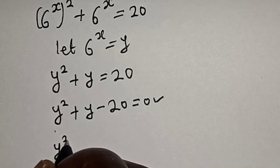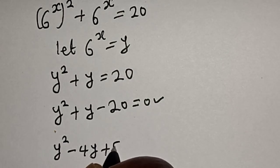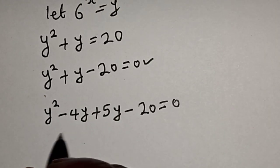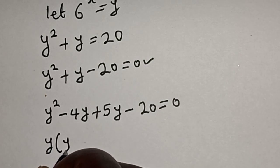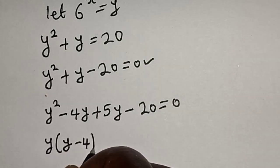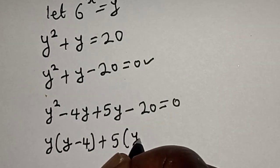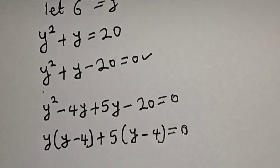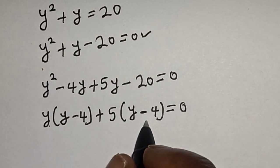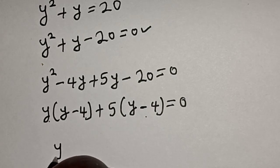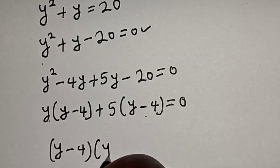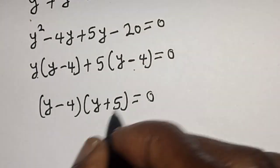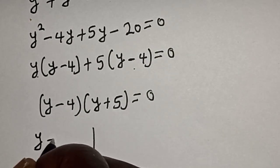This is a quadratic equation and we can solve it using the factorization method. We rewrite it as y squared minus 4y plus 5y minus 20 equals 0. Then y is common: y times (y minus 4) plus 5 times (y minus 4) is equal to 0.